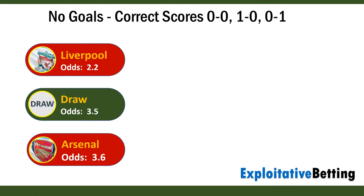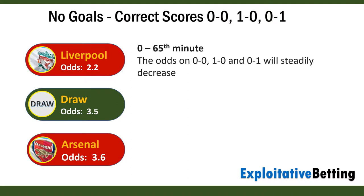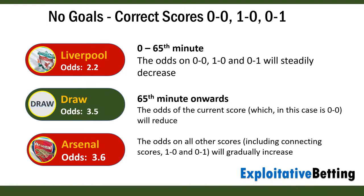When no goals are scored, the correct scores 0-0, 1-0 and 0-1 alter similarly when the teams are closely matched. If a goal isn't scored, the odds on 0-0, 1-0 and 0-1 will progressively reduce up until around the 65th minute of the match. At around the 65th minute, the odds of the current score — which in this case is 0-0 — will reduce, and all the other scores, including 1-0 and 0-1, will start to move out.